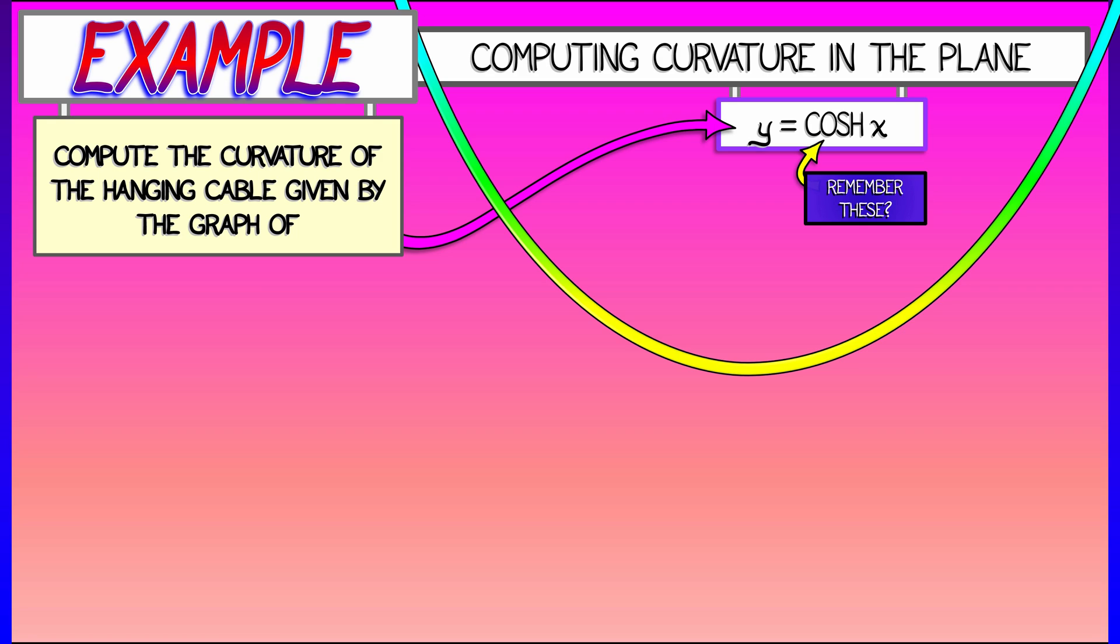If you don't recall those, you might want to take a few moments. Go back, review your hyperbolic sine, hyperbolic cosine. We're going to need those. Remembering that the formula for the hanging cable is given by a hyperbolic cosine, or cosh.